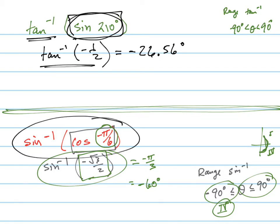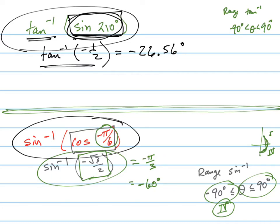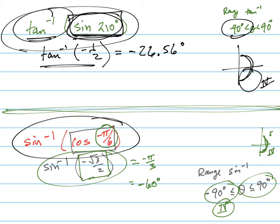A lot of times they'll give you these questions and expect you to do it without a calculator, and you can if you have your unit circle and understand the concept. Sometimes though, they'll give you a question they wouldn't expect you to do without a calculator. They might ask what quadrant is it in, and you could say it's in the fourth quadrant — between negative 90 and zero — because you know the sine of 210 is negative. So the tangent inverse of a negative value has to be in that fourth quadrant, because that's where your tangent inverse would be negative as well.